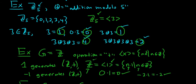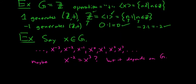As you can see in the Z sub 5 example above, things cycle. If we had done five copies of 3, that's 15, and 5 goes into 15 three times with remainder 0, so it cycles back to 0. So the terms cycle — it depends on g.